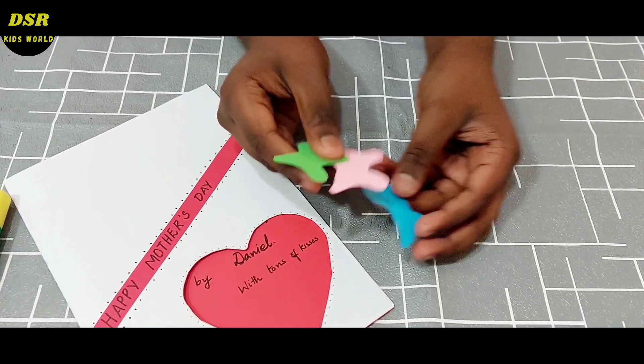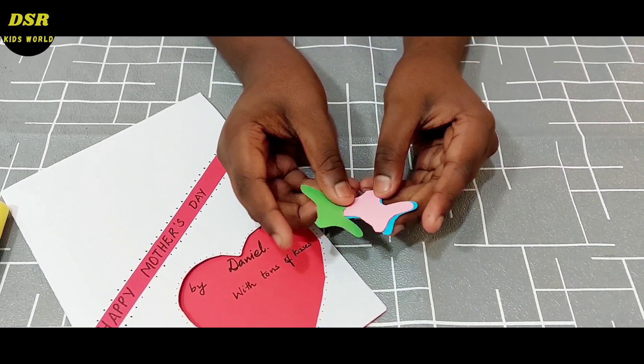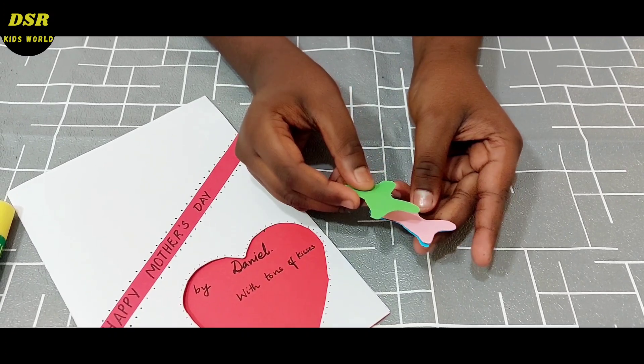Now, I am going to cut the pink butterfly even smaller than the blue, and the green even more smaller than the pink.